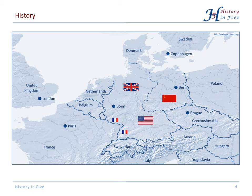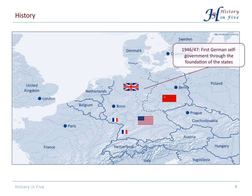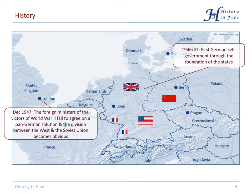Before coming to that, there was actually quite early some kind of self-government to a certain extent, because the German states were founded in 1946 and 1947. At the end of 1947, there was a last attempt to find a pan-German solution, but this went wrong, and it was very obvious that there was a division between the Western powers and the Soviet Union.